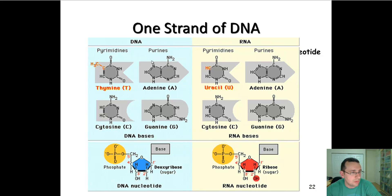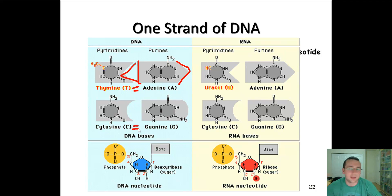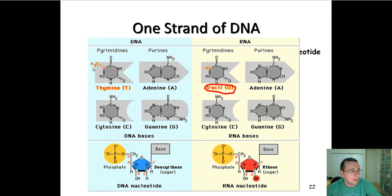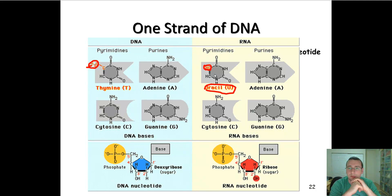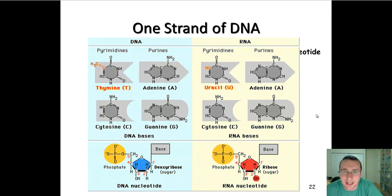Putting it all together: purines have double rings and pyrimidines have single rings. Notice that adenine and thymine are represented almost like one has a hole that fits the other — hinting at base pairing rules where A always fits with T and G always fits with C. In RNA, the base thymine is replaced with uracil. There's barely any difference — instead of having a methyl group, you just have a hydrogen connected to the carbon, making it a simpler molecule. Since RNA doesn't have a double strand, uracil is more stable when unpaired.